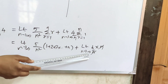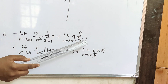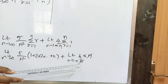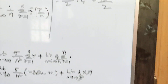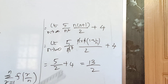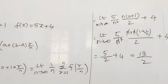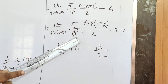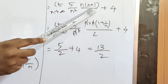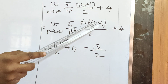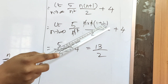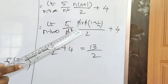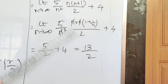Plus limit n tends to infinity, 4 by n, into summation of 1, n times = n. So limit n tends to infinity, 5 by n squared, using the formula 1 plus 2 plus 3 up to n = n(n+1) by 2, then plus 4. So 5 by n squared times n(n+1)/2: taking n common in the bracket gives n times (1 plus 1/n). Then n times n gives n squared, which cancels with the n squared.